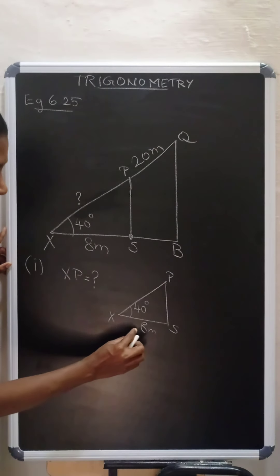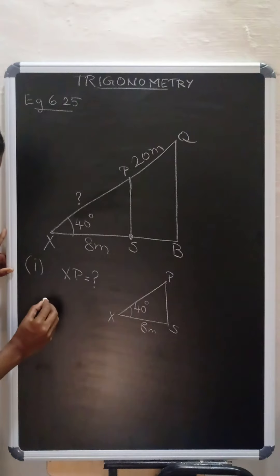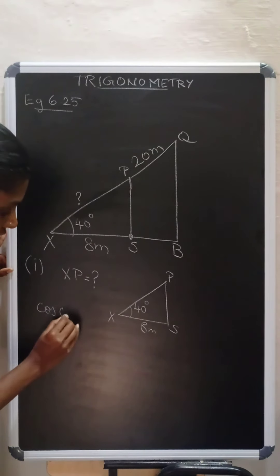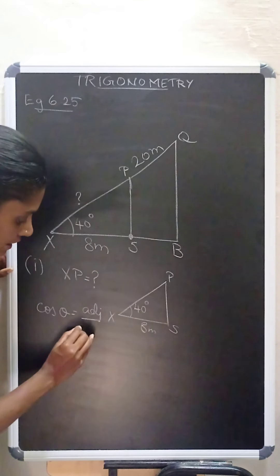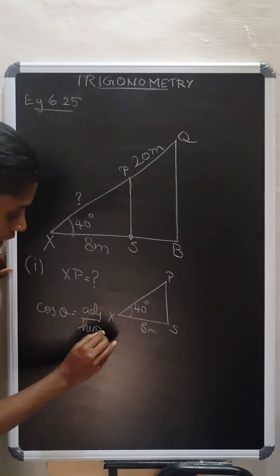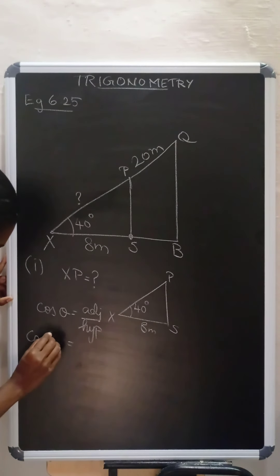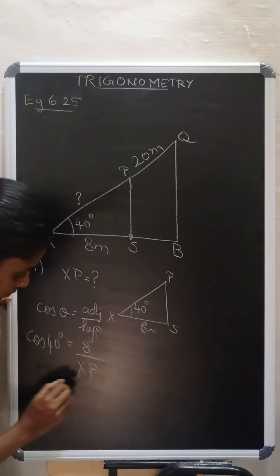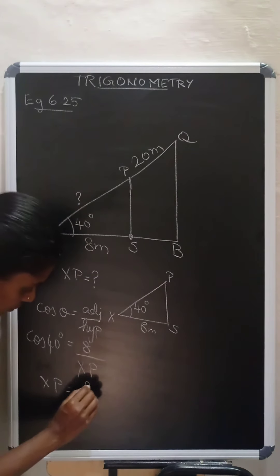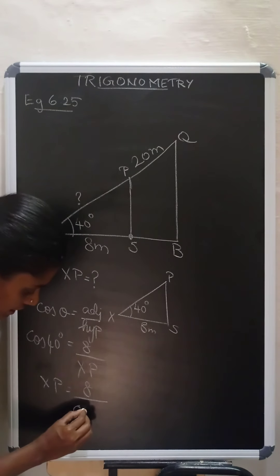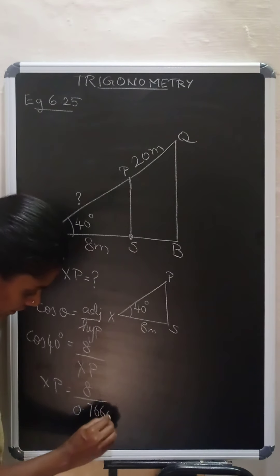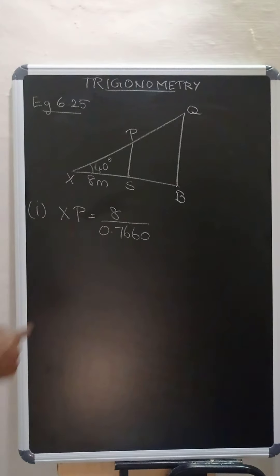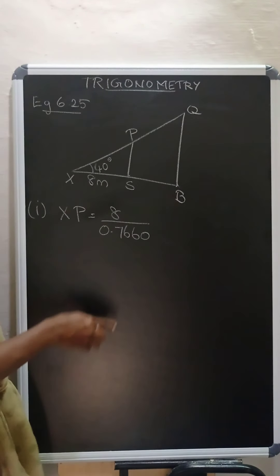Now they are asking you to find the hypotenuse. You have the value for adjacent, and this is opposite. So which ratio uses adjacent and hypotenuse? That is cos theta. Cos theta is equal to adjacent by hypotenuse. So cos 40 degrees is equal to 8 by XP. Therefore XP is equal to 8 divided by cos 40, and the value of cos 40 is 0.7660.